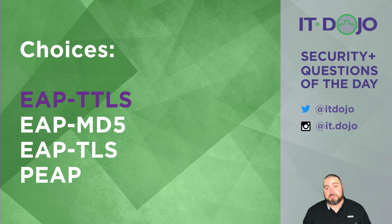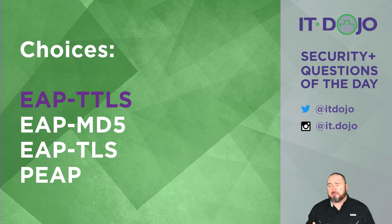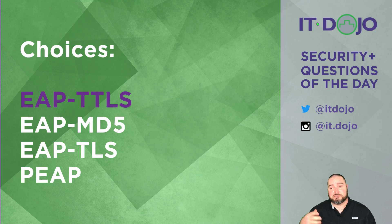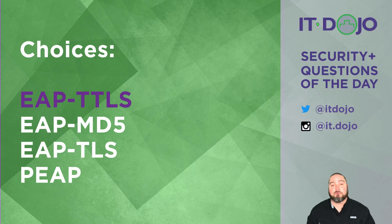Your next choice is EAP-TLS. Both sides would have to have a certificate, so this one's not going to work as an answer. It's considered to be one of the strongest ways of doing EAP because it is purely certificate-based on both sides — the server has a certificate and all clients have a certificate as well. That also makes it one of the more challenging ones to implement, so it's not the answer we're looking for here.